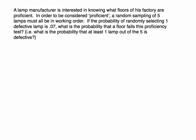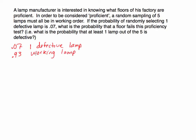Let me write down what I know. The probability of getting one defective lamp is 0.07. Subtracting from one — because it's either defective or it's not — gives 0.93, the probability of getting a working lamp. There's a 93% chance any randomly selected lamp is working. If you're unsure how we got that, look for the complement rule in earlier videos.